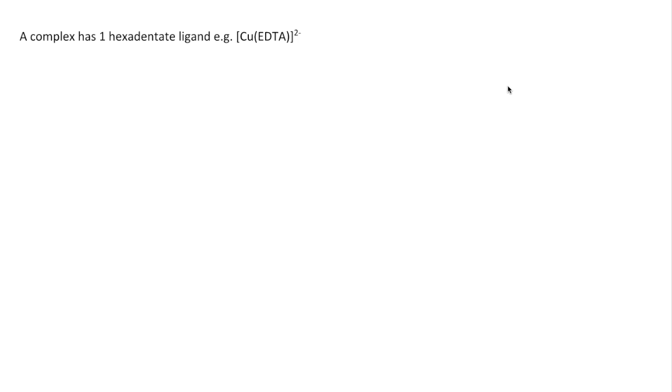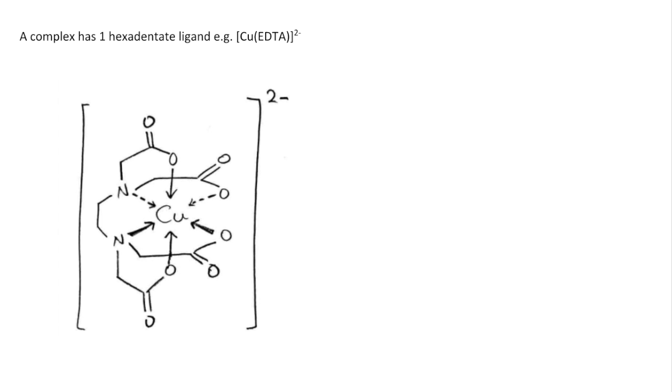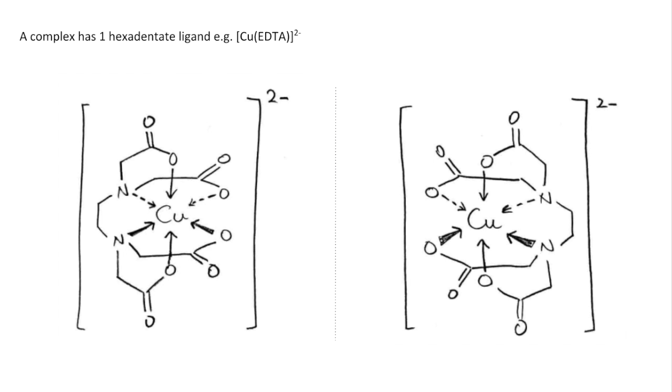And then finally, a complex, if it has one hexadentate ligand—remember EDTA4- is a hexadentate ligand—so don't worry, you would never have to draw this in the exam. That is one form of the isomer, and the mirror image is the other isomer, the optical isomer.